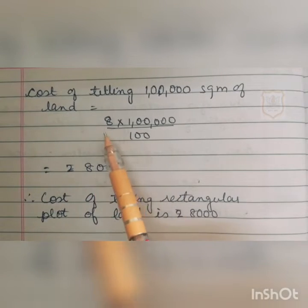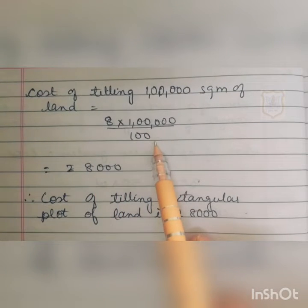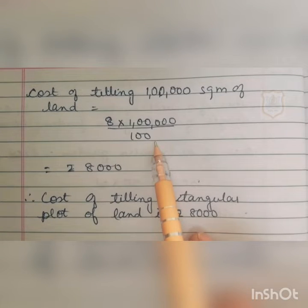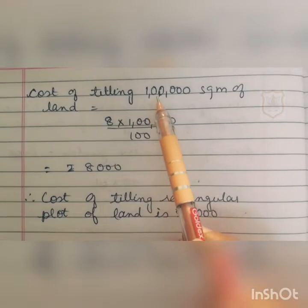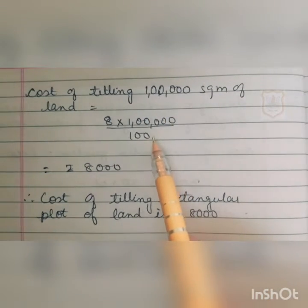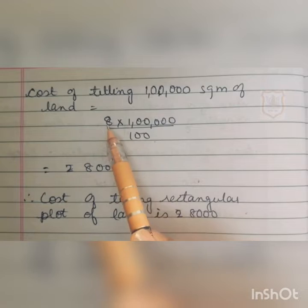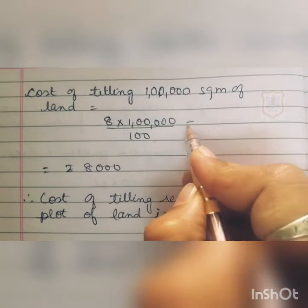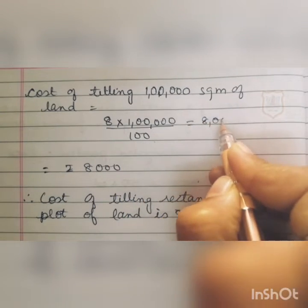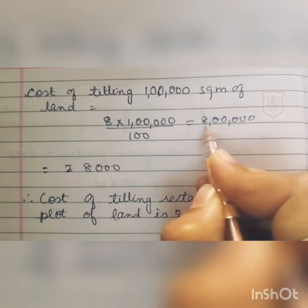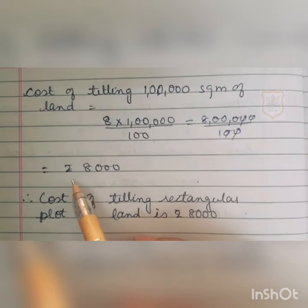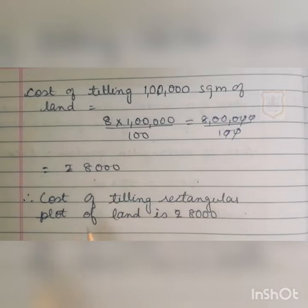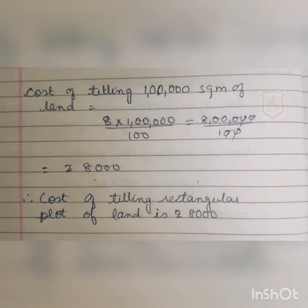The cost of tiling 1 lakh square meters of land is 8 × 1 lakh ÷ 100. Multiplying 8 by 1 lakh gives 8 lakh, and dividing by 100 cancels two zeros, giving 8000. So the cost of tiling the rectangular plot of land is rupees 8000.